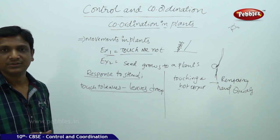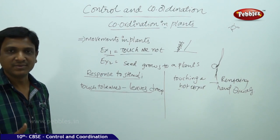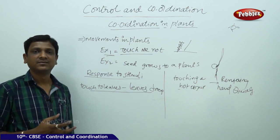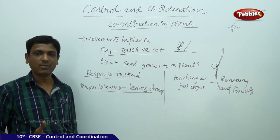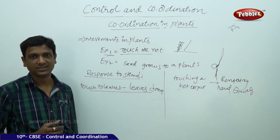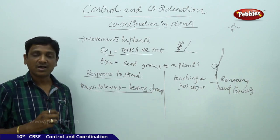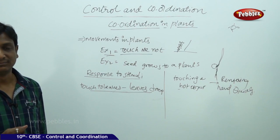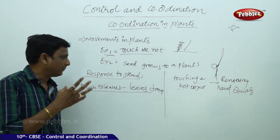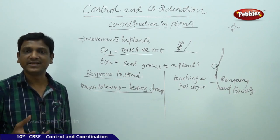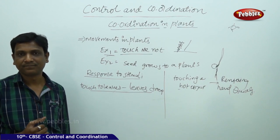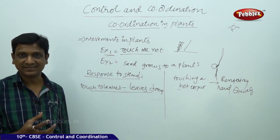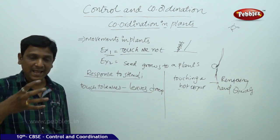Then how is the movement or response produced? Do plants have muscles or muscle proteins? In animals, muscle proteins rearrange themselves and change shape, causing movement. But plant cells do not have muscle proteins to change their shape. In the case of plants, movements at the cellular level are caused by a change in the arrangement of cells and by the increase or decrease in cell size based on the amount of water present in the cell.